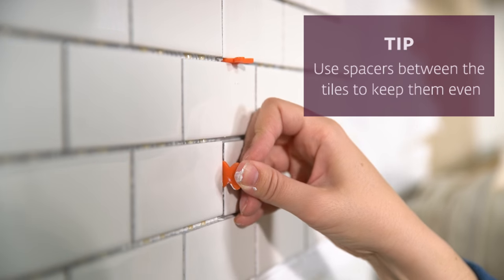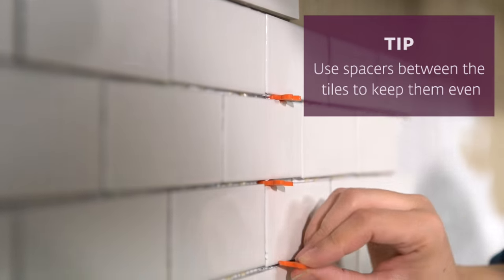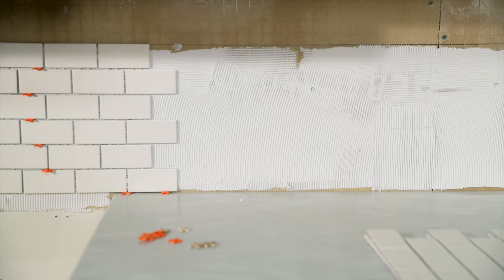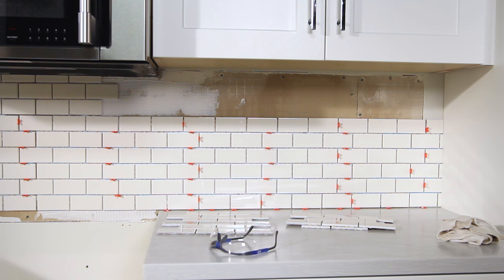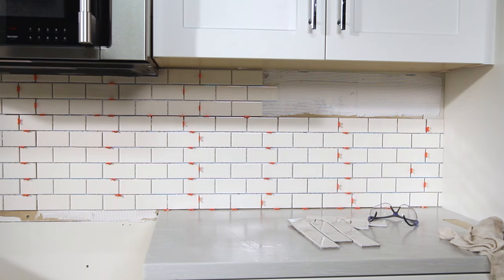Insert spacers between the tile sheets to make sure you have uniform spacing across the wall. The spacers should match the space between tiles in the tile sheets. Apply a sheet of tile, then work your way out.